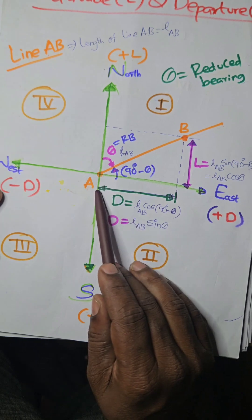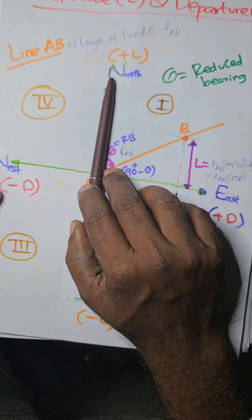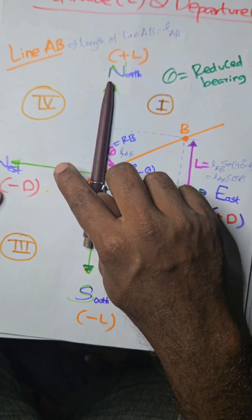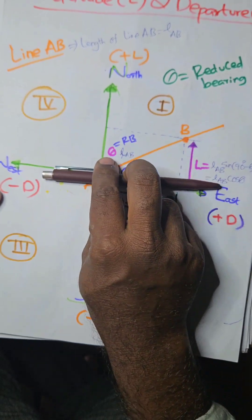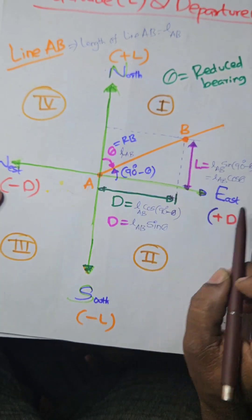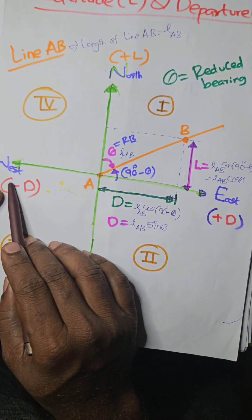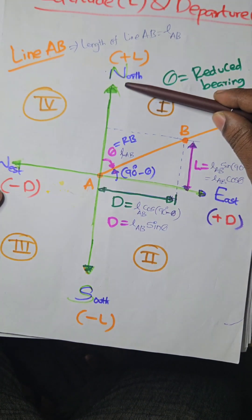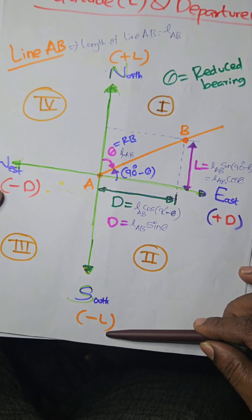If you project line AB in the north-south direction, then it is called latitude. If you project line AB in the east-west direction, then it is called departure. Towards east, departure is positive; towards west, departure is negative. Towards north, latitude is positive; towards south, latitude is negative.